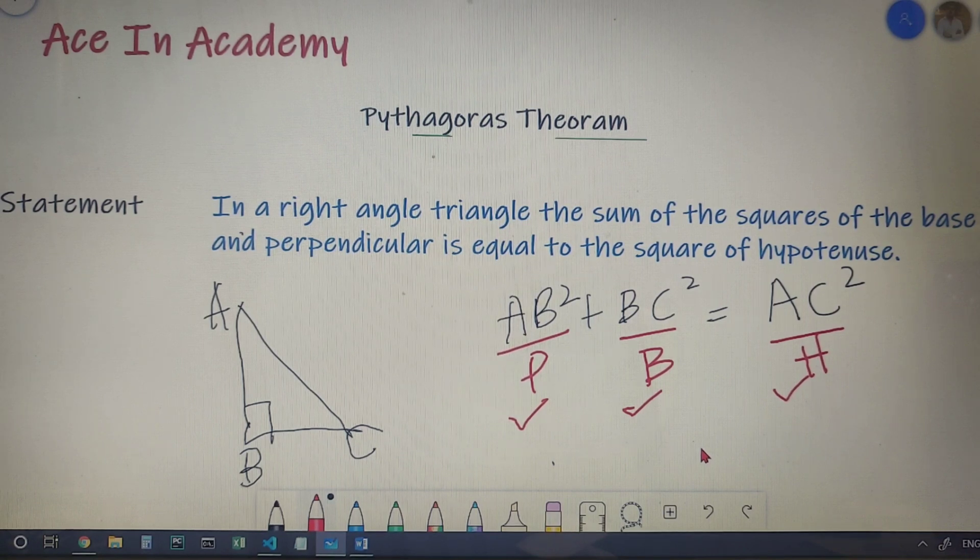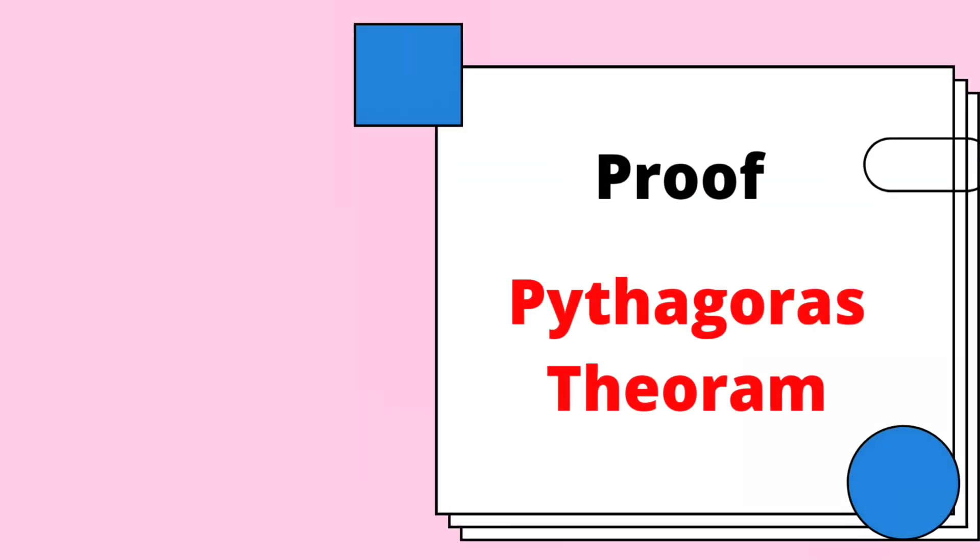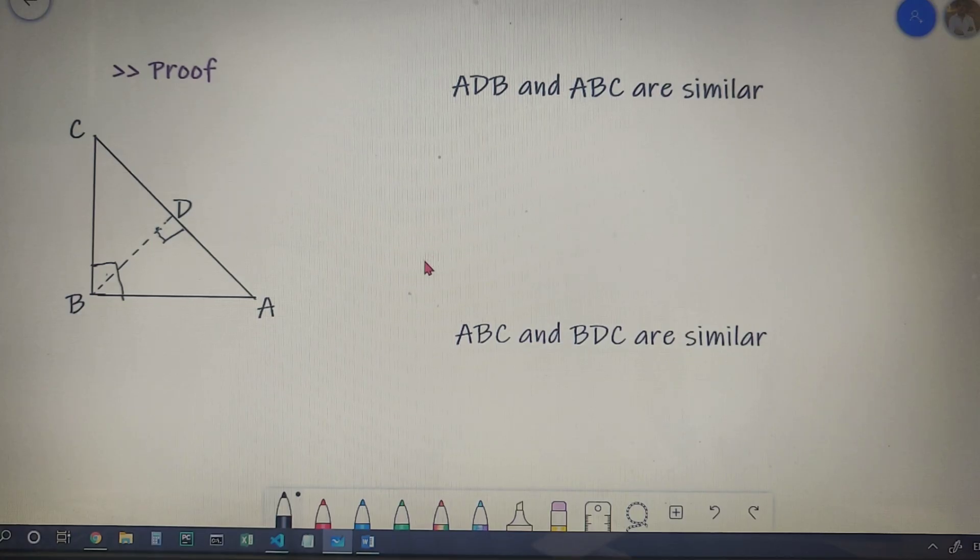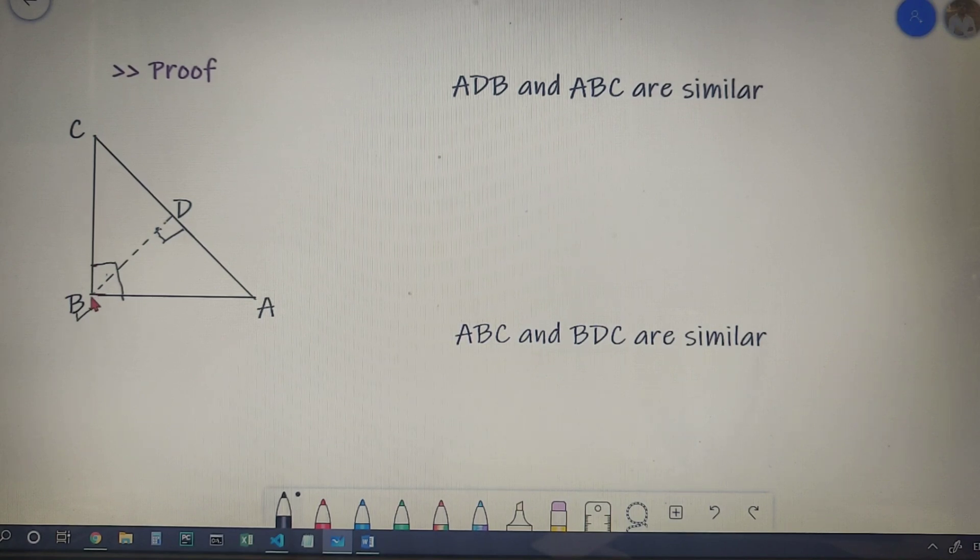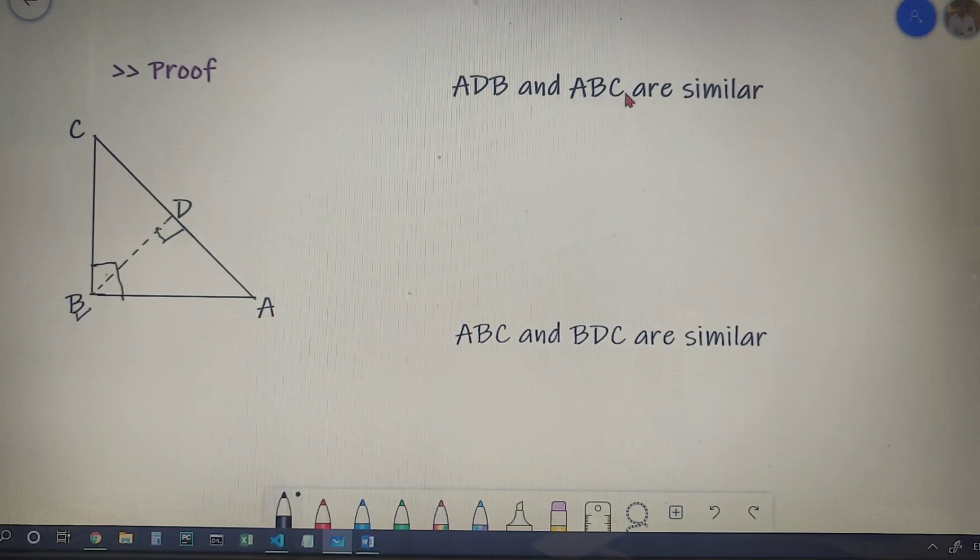So let us prove the Pythagoras theorem. For that we have taken a triangle ABC which is right angle at the vertex B. We have dropped a perpendicular BD on the side AC, so from this we get triangle ADB and triangle ABC are similar.